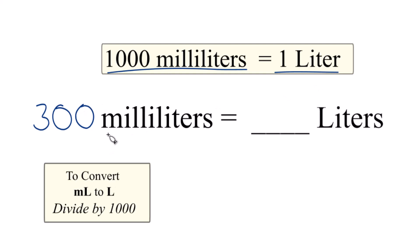Since we only have 300, we know the number is going to be less than 1, so we'll have less than 1 liter. So to convert from milliliters to liters, we're going to divide by 1,000.